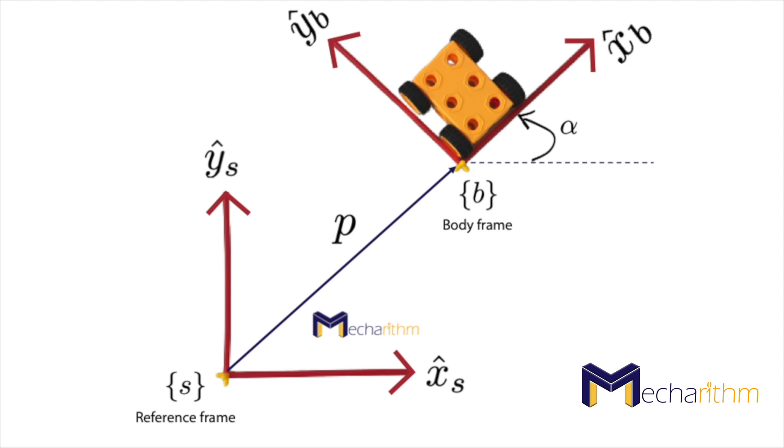b is called a body frame since it's a fixed frame attached instantaneously to the moving body. Therefore, to find the configuration of the toy car you should express the position and orientation of the body's fixed frame coordinates in the base frame coordinates.